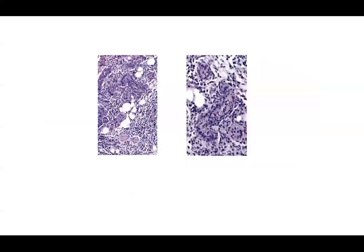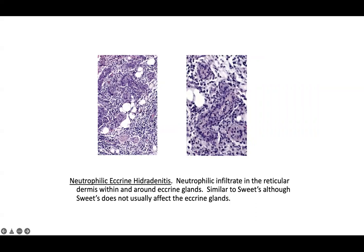In this picture you have to see what type of inflammatory cell predominates and what structure it's attacking. Most of these are neutrophils and this uninvolved portion looks like an eccrine gland — so this is neutrophilic eccrine hidradenitis. You'll want to see neutrophilic infiltrate in the reticular dermis within and around eccrine glands. It's similar to Sweet's syndrome, although Sweet's does not usually affect eccrine glands. If you've got a picture of only eccrine glands affected by neutrophils, neutrophilic eccrine hidradenitis fits perfectly.